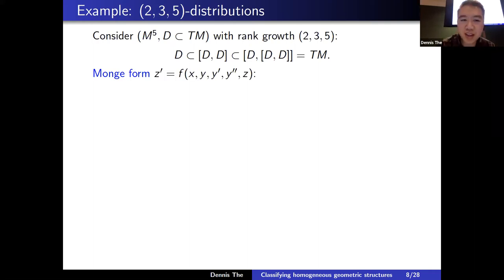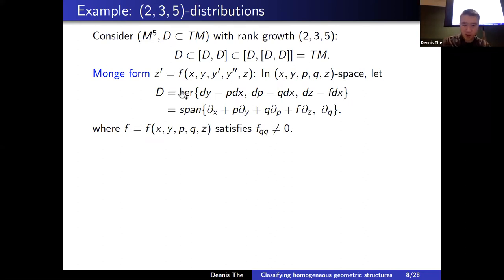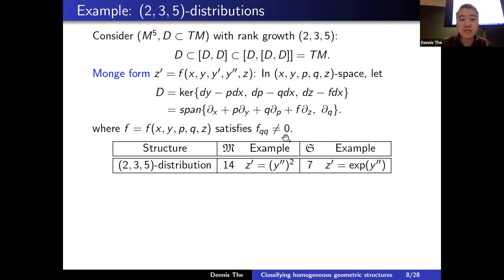This two-three-five structure has a normal form called the Monge form, corresponding to a certain underdetermined ODE. In x,y,p,q,z space I define a rank-three sub-bundle of one-forms — standard contact forms but with z′ replaced by f — and equivalently encode it by the annihilator: a span of vector fields, where f is a function of five variables. A genericity condition is imposed: the fourth derivative of f with respect to q does not vanish, i.e., f_{qq} ≠ 0.